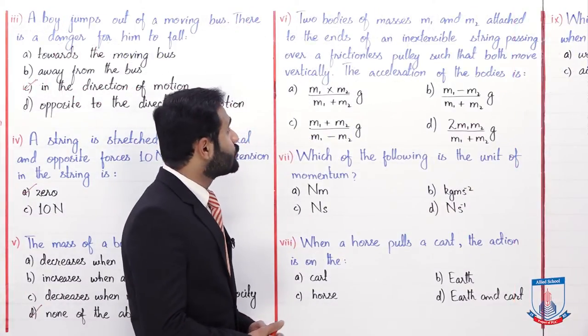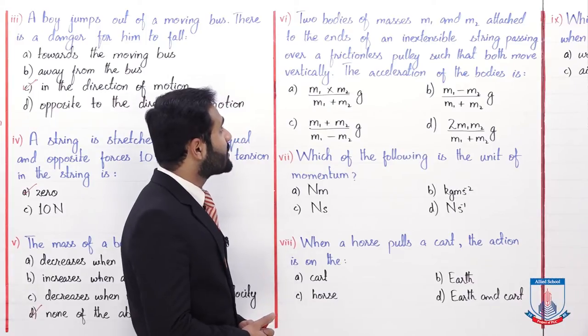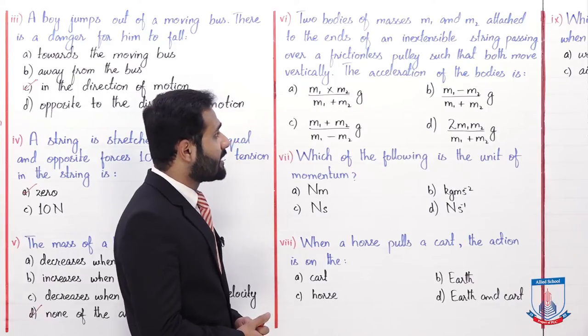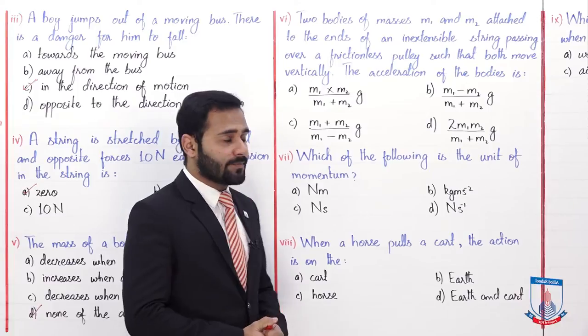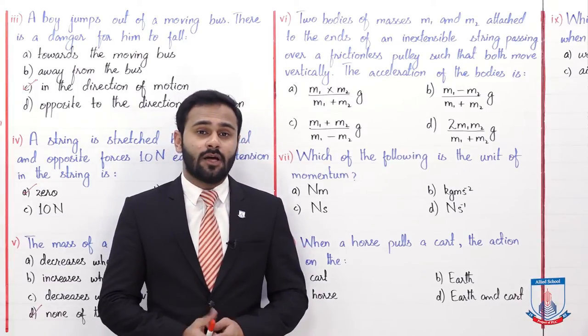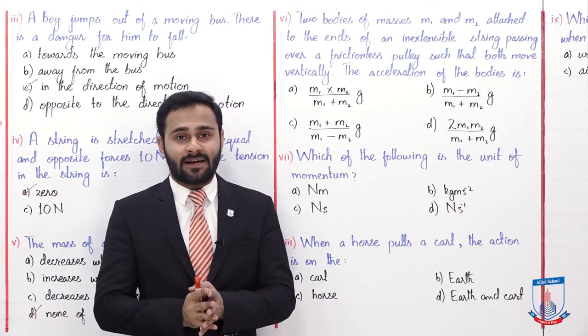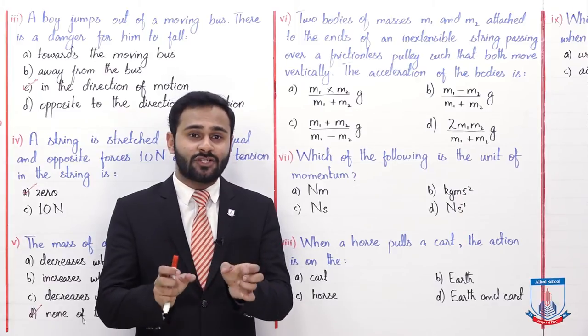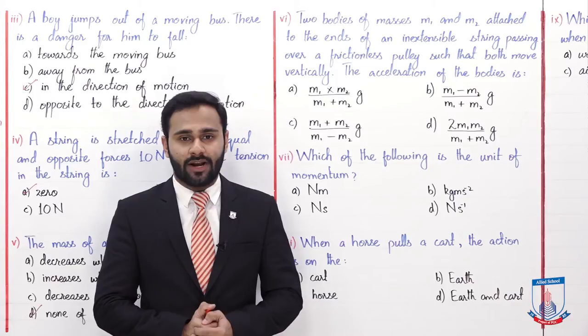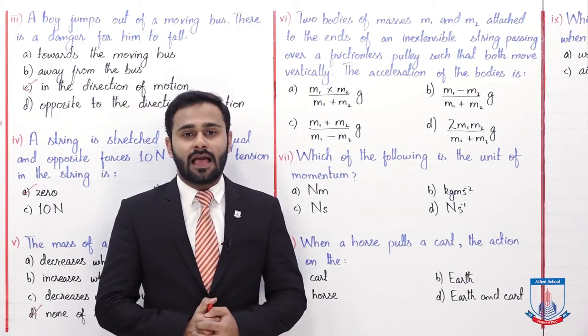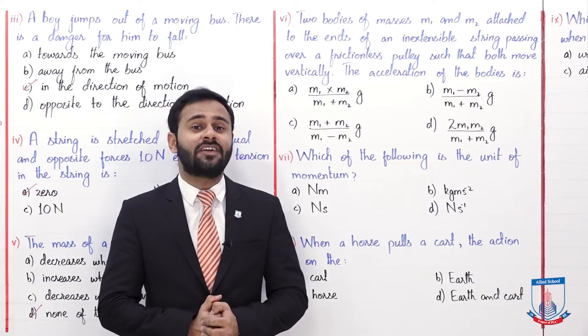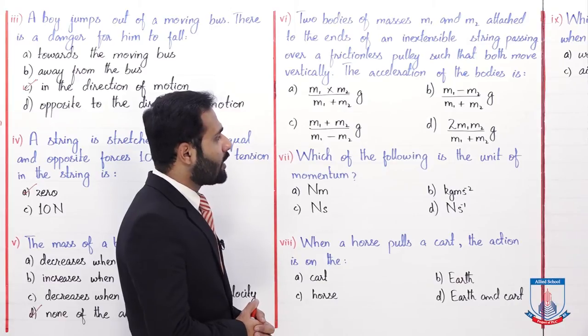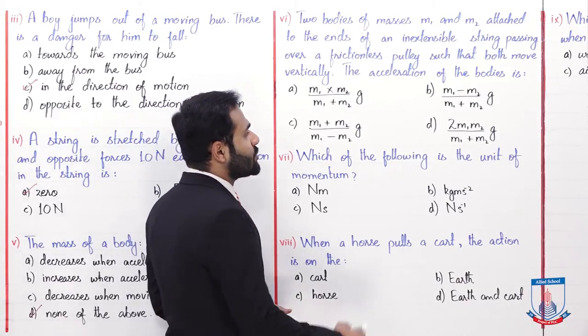So now move to the next MCQ. Two bodies of masses m1 and m2 attached to the ends of an inextensible string passing over a frictionless pulley such that both move vertically, the acceleration of the bodies is. We discussed in our lecture that when two bodies are attached with a string passing over a frictionless pulley and their placement is vertically downward, then the acceleration equals to m1 minus m2 over m1 plus m2 into g. So the correct option is B.